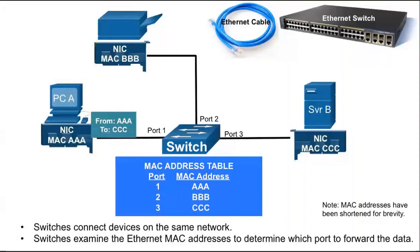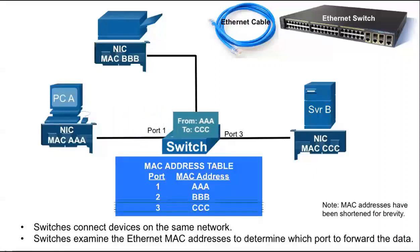For example, when PCA sends data to Server B, it does so by sending that message to the server's Ethernet MAC address CCCC. When a switch receives a message, it examines the destination MAC address in the message to determine which port to forward the data.